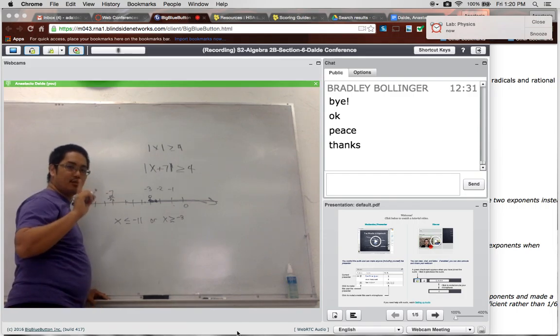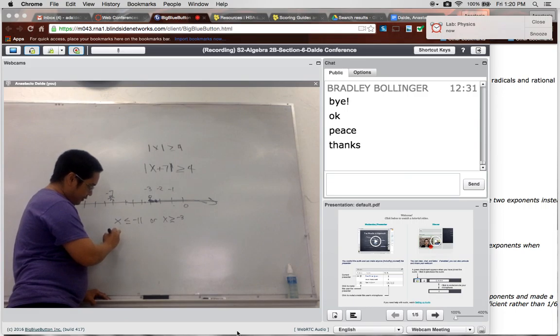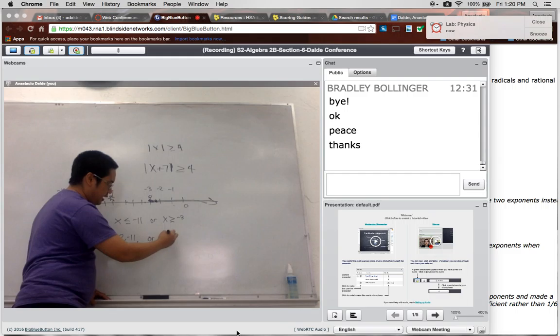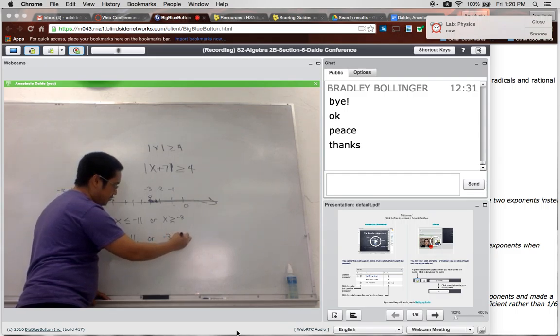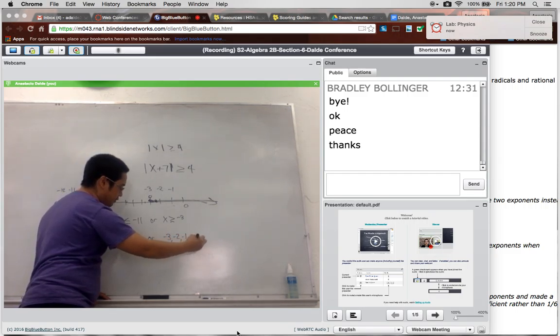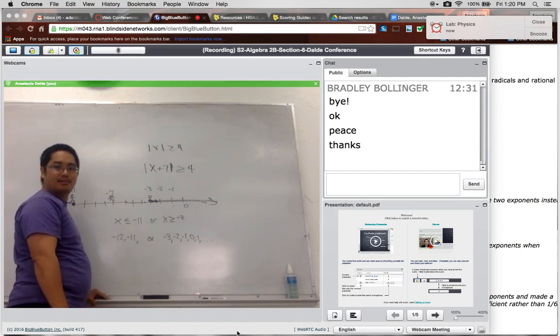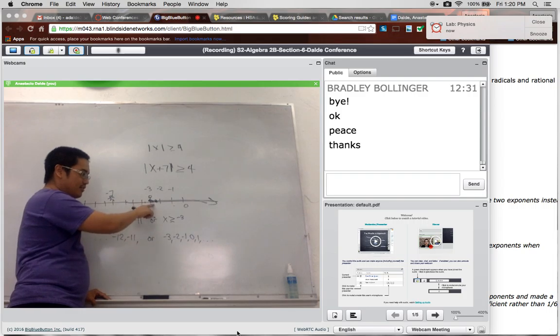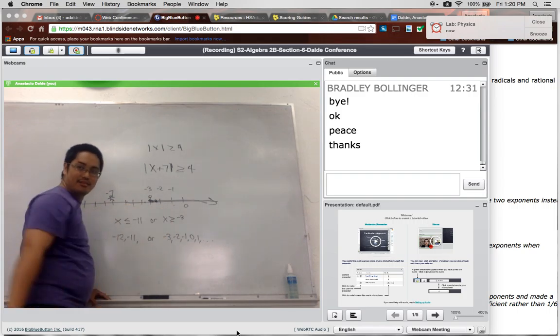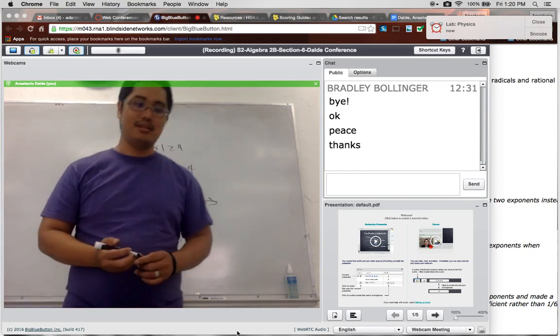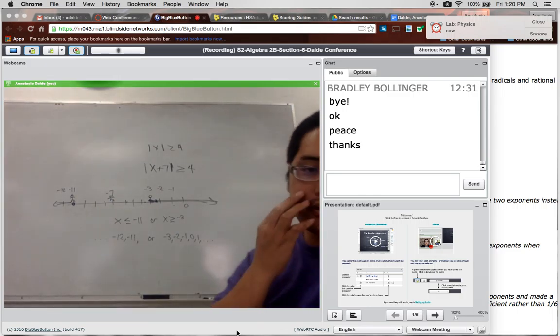So absolute value doesn't really have anything to do with integer solutions. But I think I realized how they could have thrown in the word integer into that and then make your brain think that there was a connection somehow. But if I told you what are the solutions, you would tell me, oh, okay, the solutions are either x is smaller than or equal to negative 11 or x is greater than or equal to negative three. But if I asked you what are the integer solutions, then you would say negative 12, negative 11, comma, dot, dot, dot. These are integer solutions. Don't include the numbers in between here. Yeah. Does that make sense?